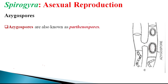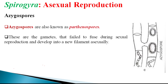The next method is the azygospore, sometimes also called a parthenospore. Azygospores are the result of gametes that fail to fuse during sexual reproduction. Since there is no gametic fusion, the single gametangium possessing the protoplast content gets converted into a spore-like structure called an azygospore. Because there is no gamete fusion, the mechanism is called parthenogenesis and the spores are referred to as parthenospores.